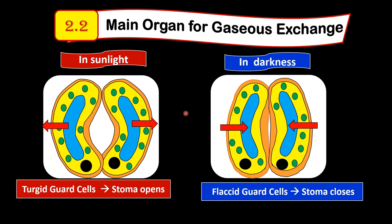Greetings to everyone. Welcome back to my educational channel on biology. I'm teacher Janet and in this video we're going to discuss subtopic 2.2 of the Fungphai biology KSSM syllabus. The title is the leaf as the main organ for gaseous exchange. We're going to study the mechanism of the opening and closing of the stoma, which is regulated by the guard cells.